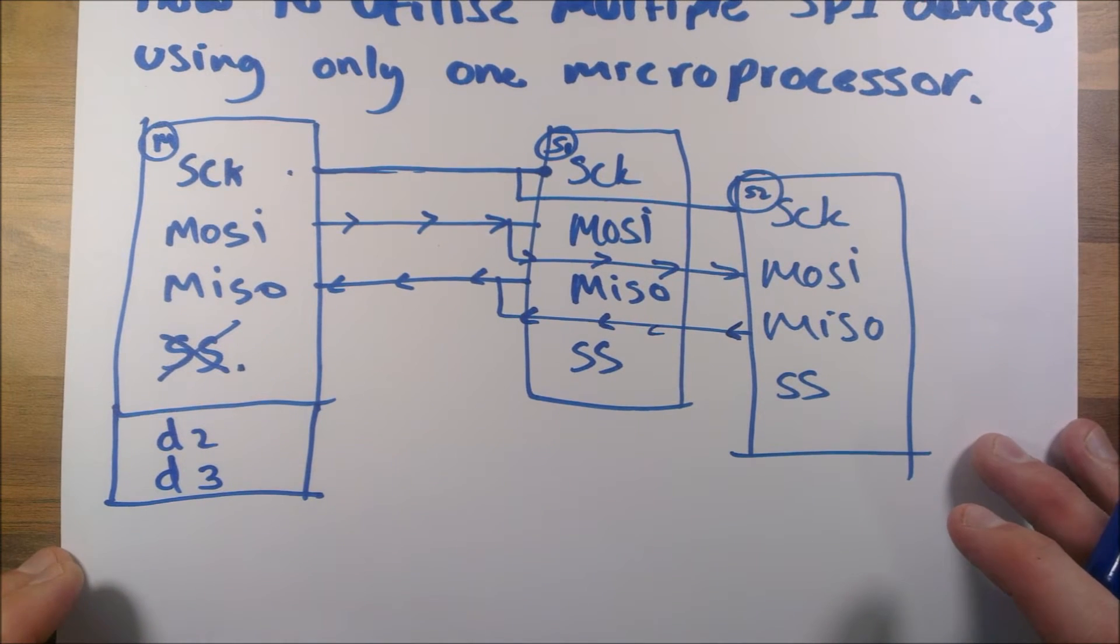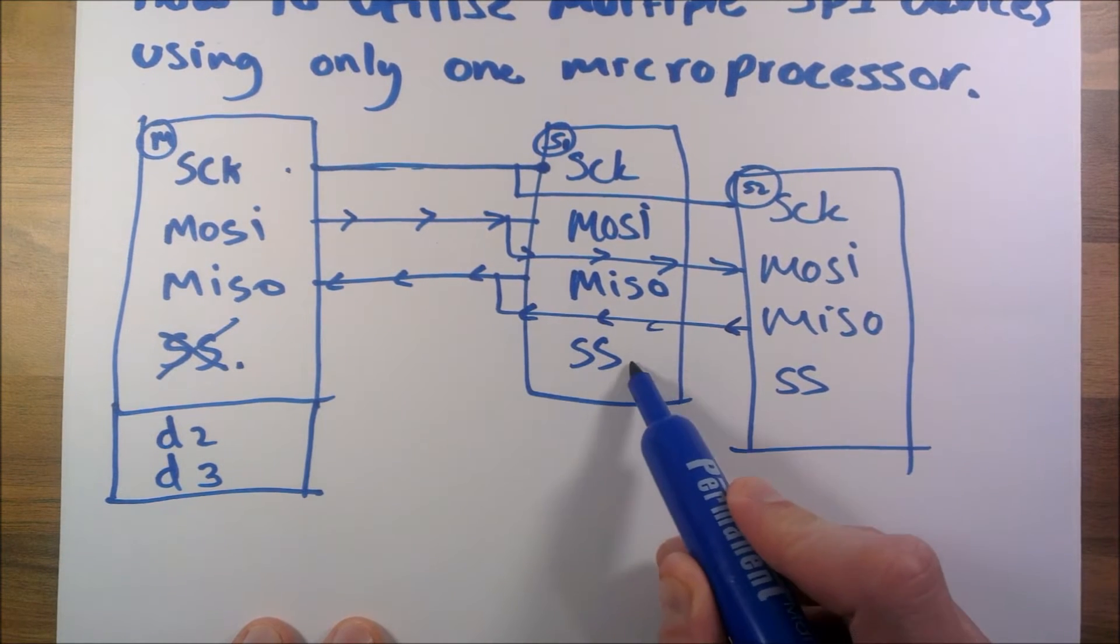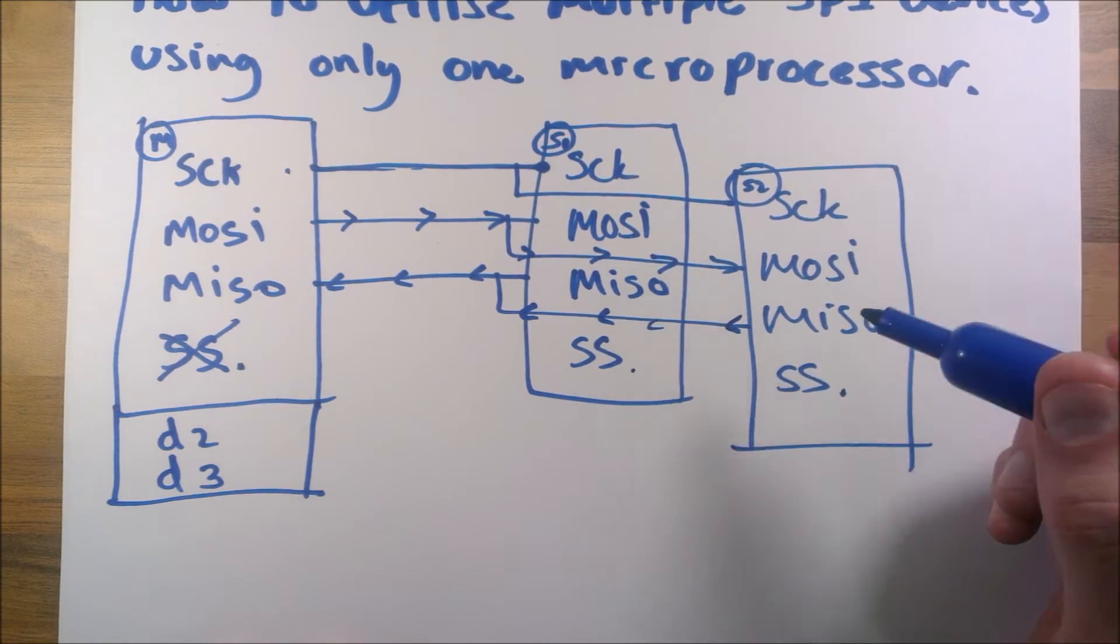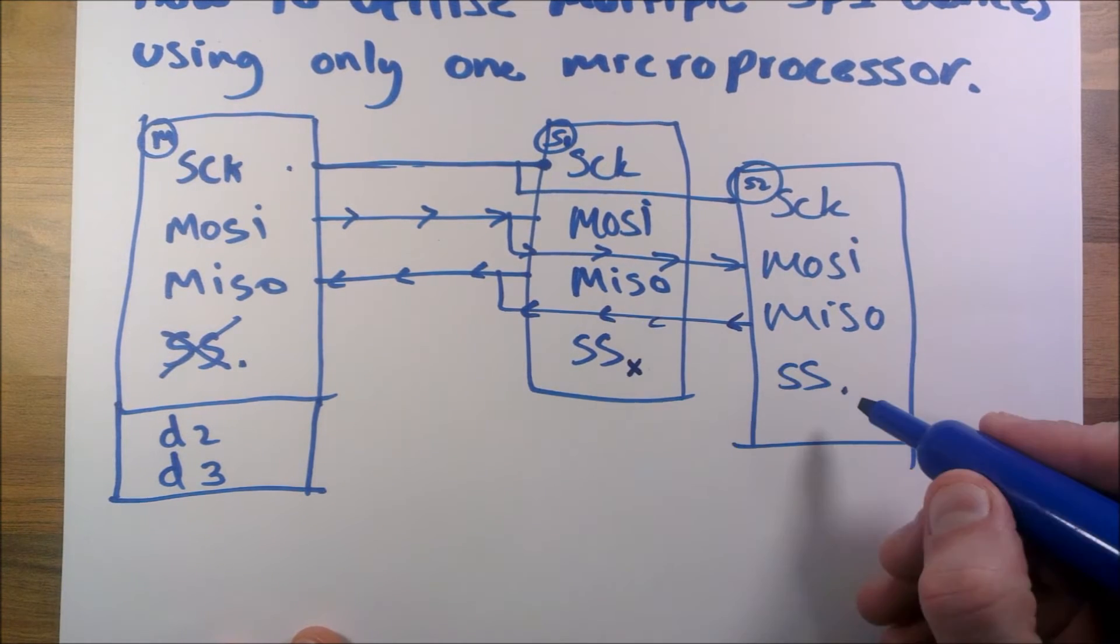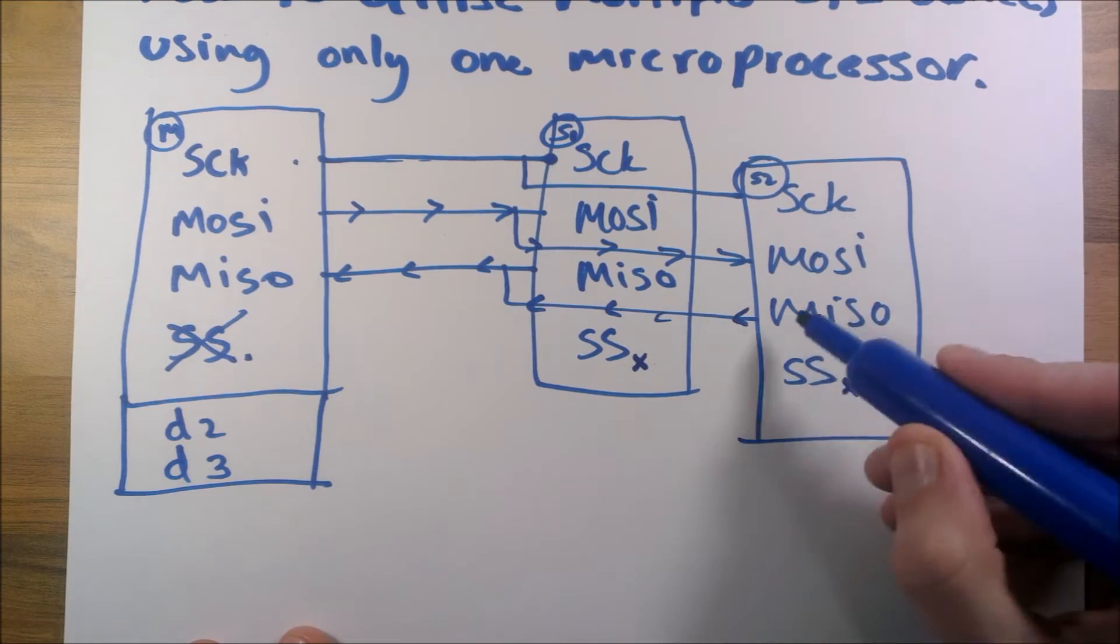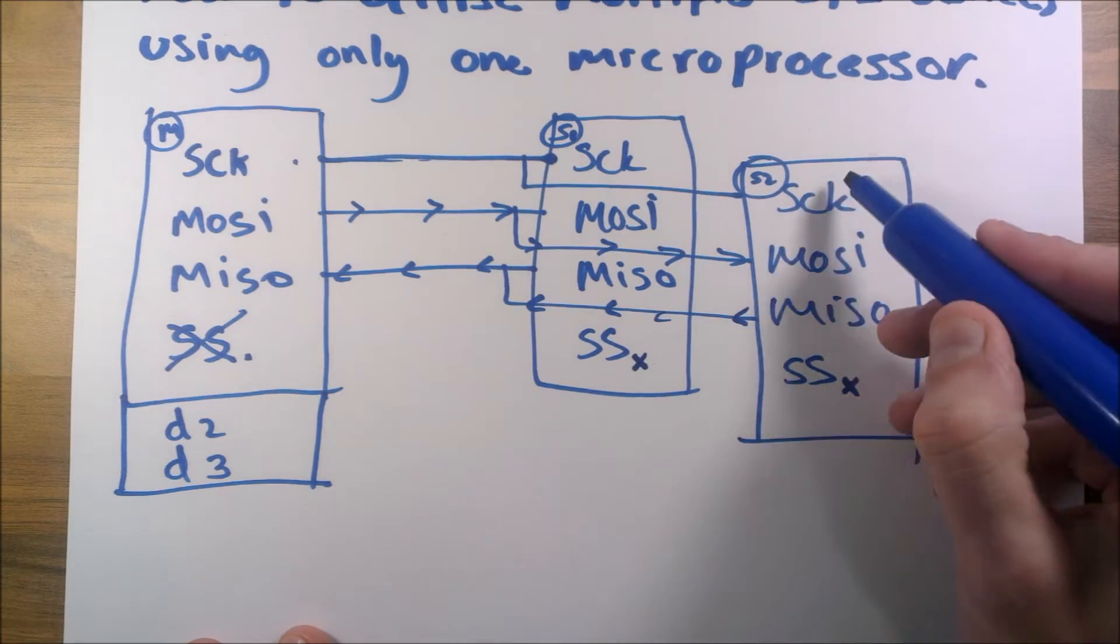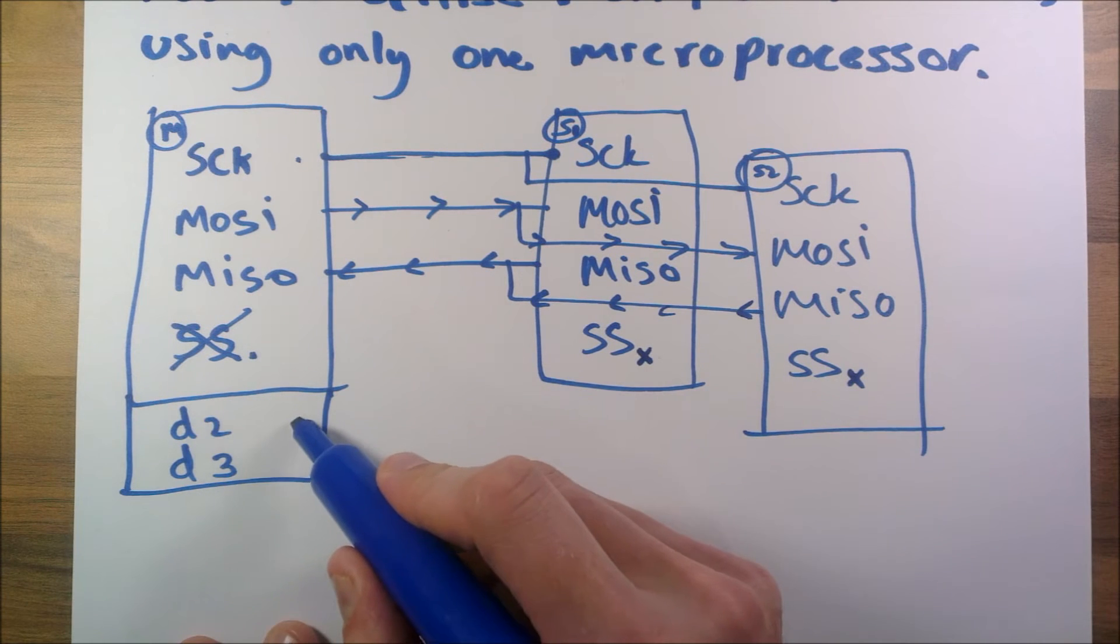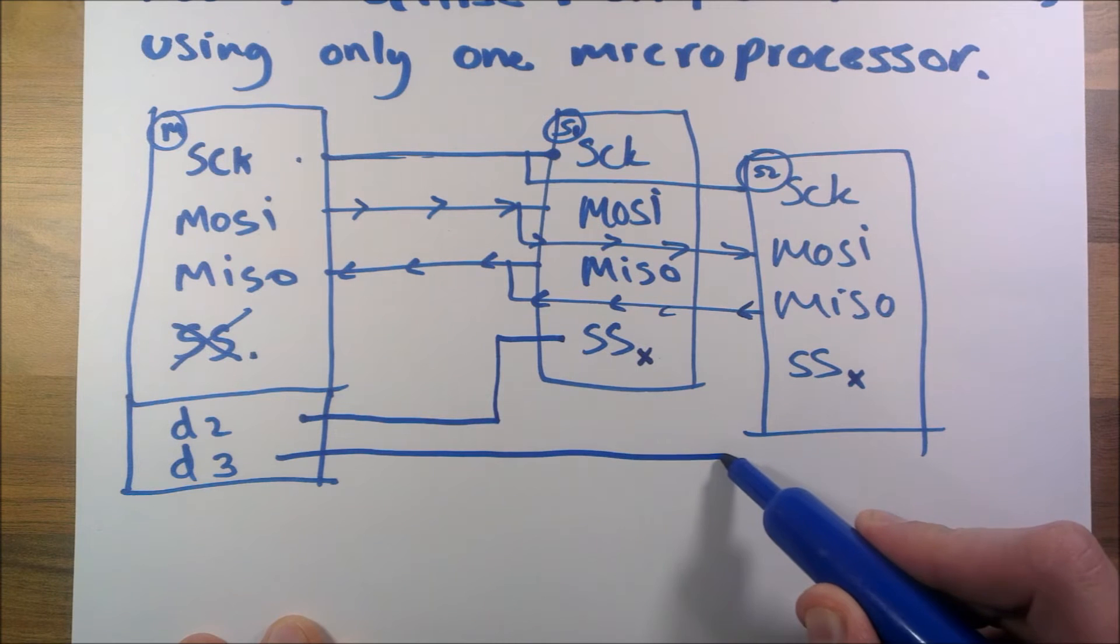What we're going to do is interface with these SS pins on the slaves. In the SPI protocols there's a provision where any devices will switch off when this is high. If this is high, the devices will basically go deaf and dumb. If SS is high, this won't respond or this won't respond. So what we have to do is get this pin here from the master, connect it to the SS there, get this one and connect it to the SS there.